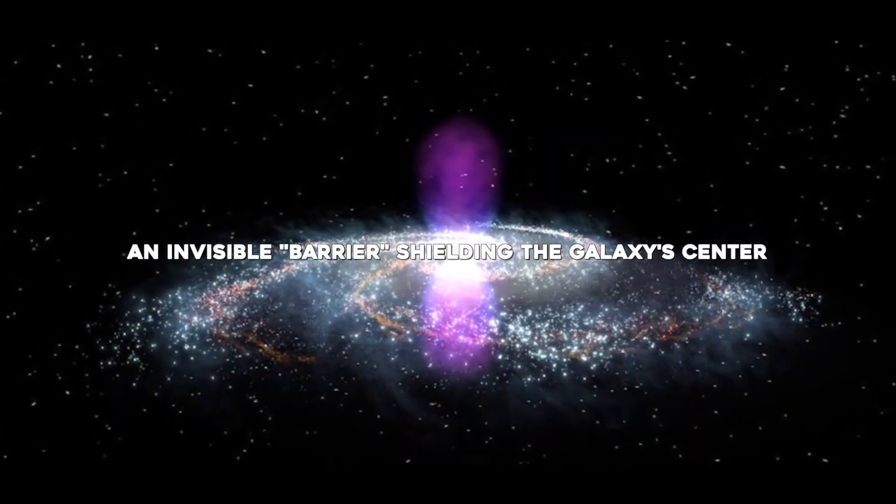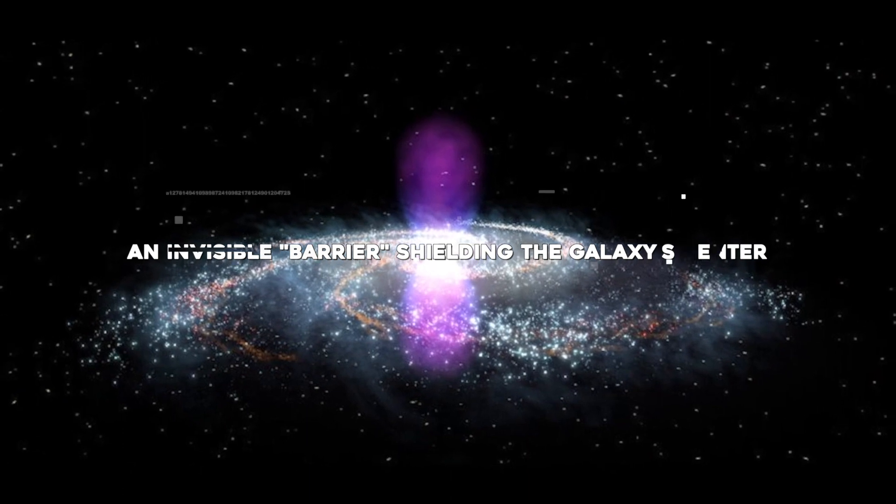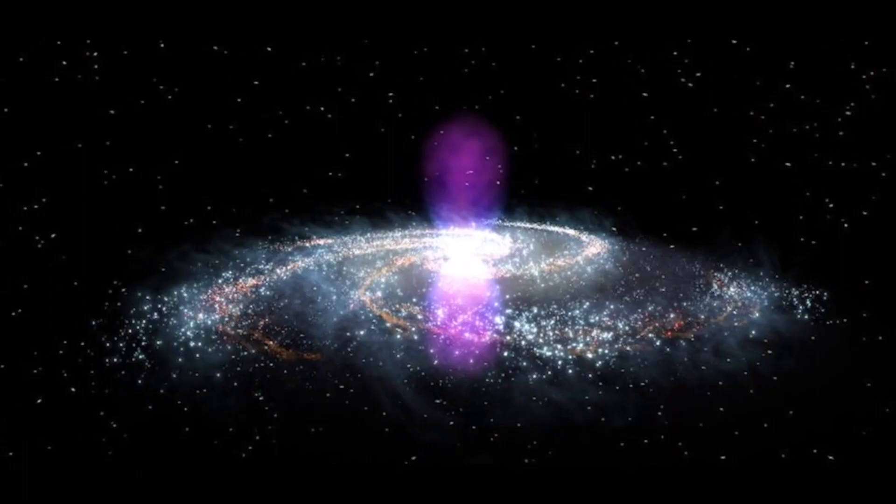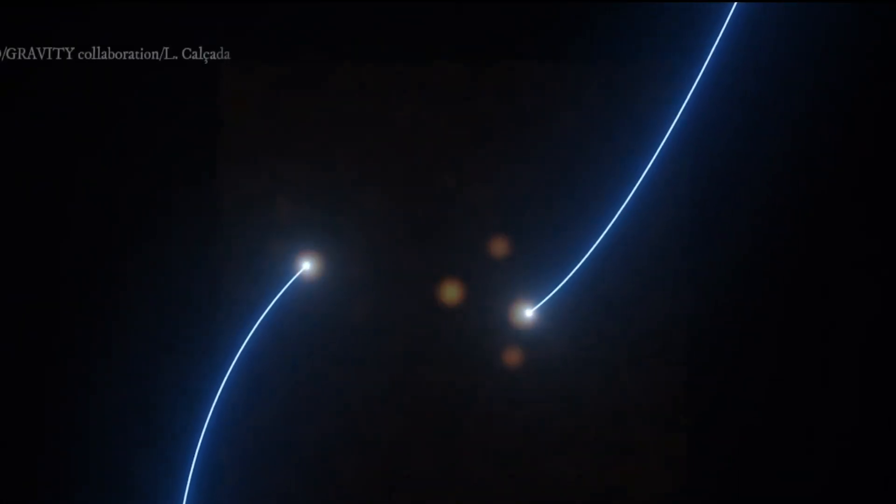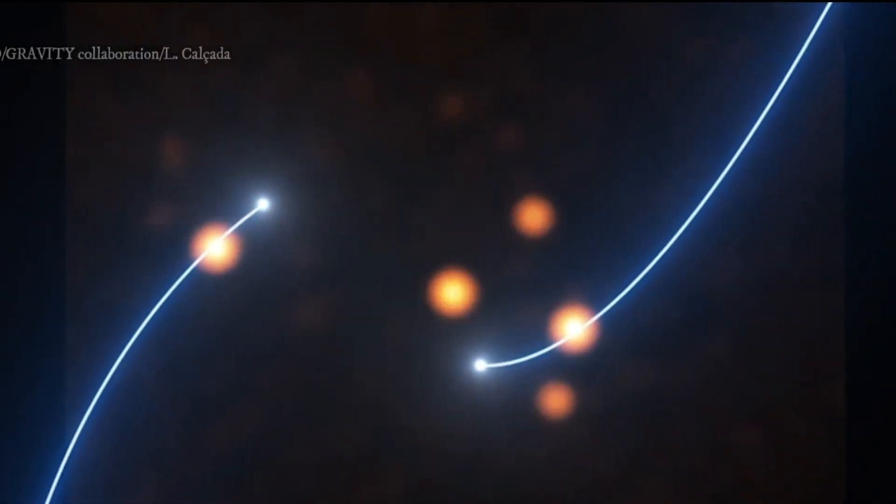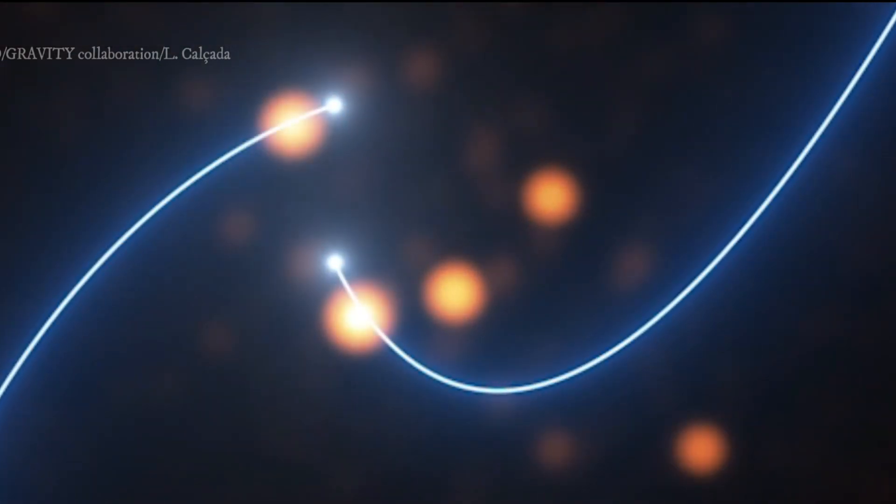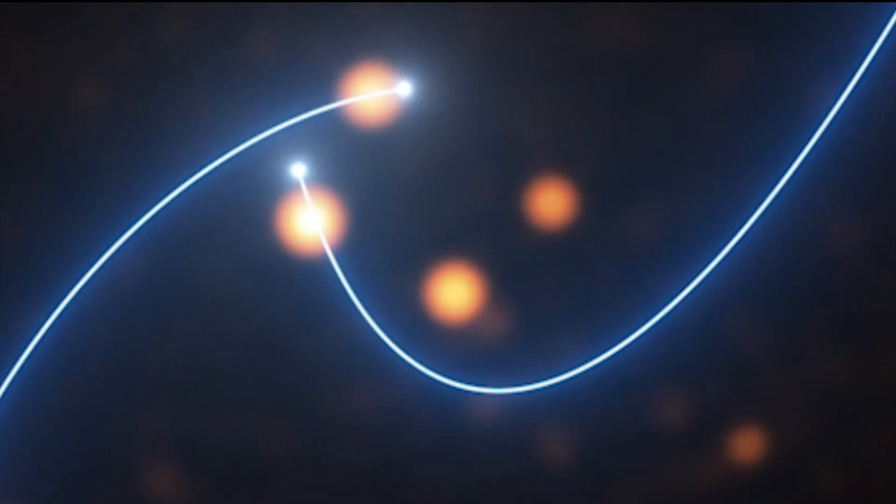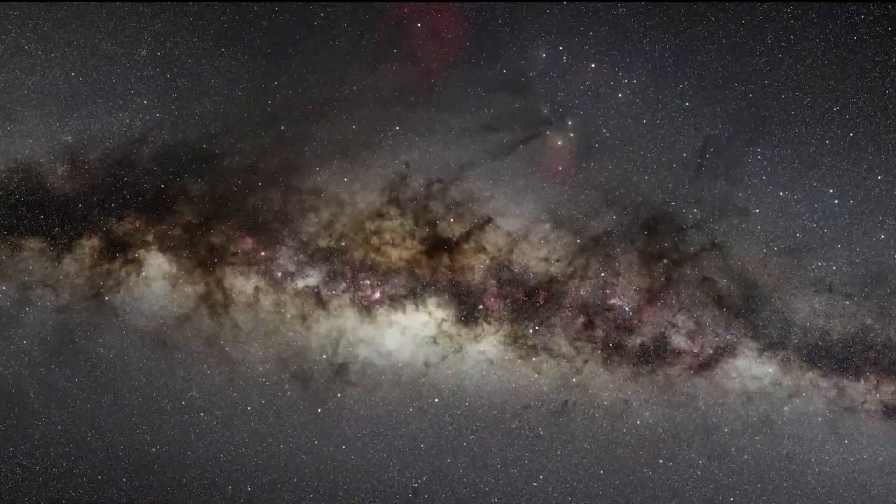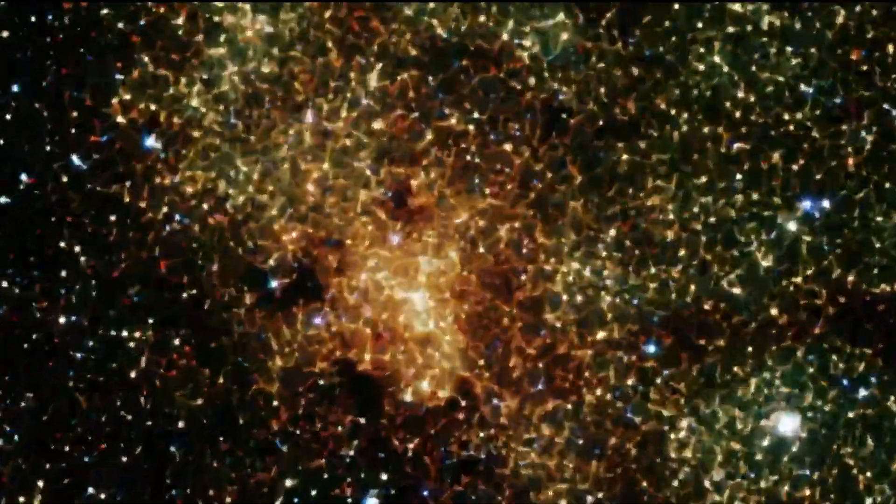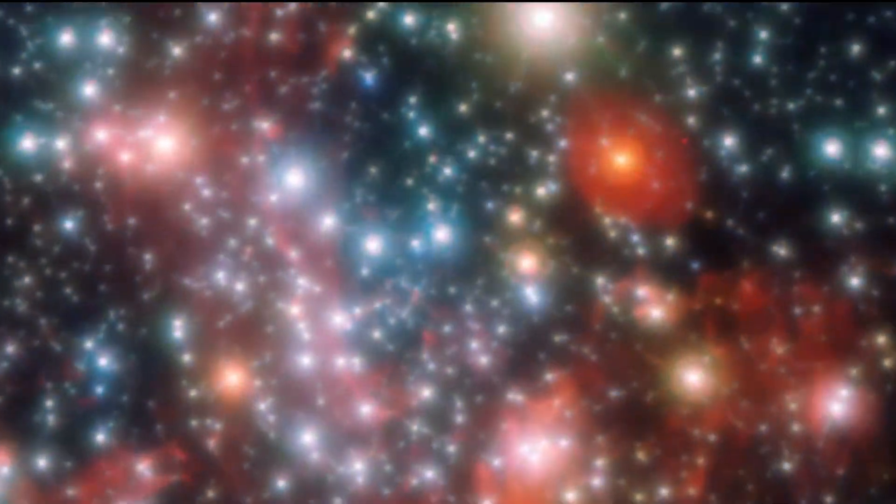An invisible barrier shielding the galaxy's center. The center of the Milky Way functions like a giant particle accelerator, shooting beams of charged matter, called cosmic rays, out into the universe at near light speed. When researchers tried to map the density of cosmic rays near the galactic center, they discovered something puzzling. Even as cosmic rays gushed out of the galaxy's center in mass, a mysterious barrier was keeping a large portion of incoming cosmic rays from entering the center at all.